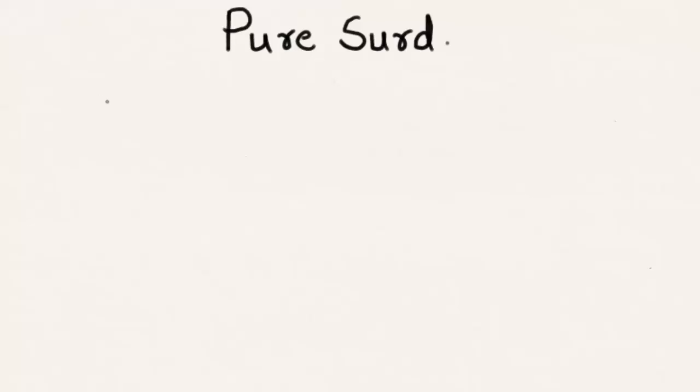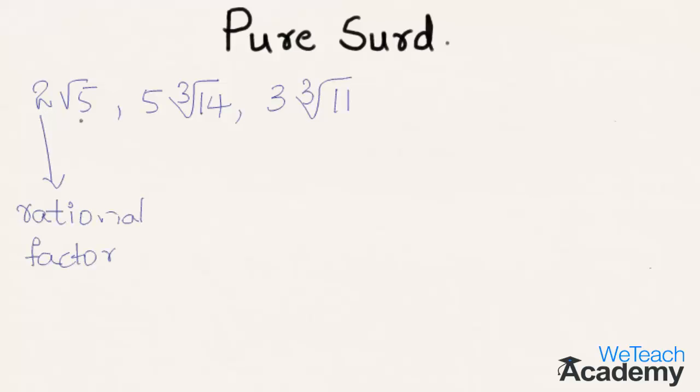Let us take a few surds. Here we have 2 into root 5, 5 cube root of 14, 3 cube root of 11. We have rational factor 2 here and the other factor is being irrational.